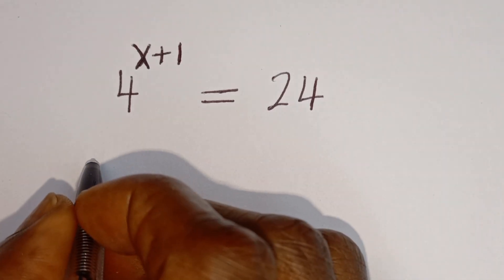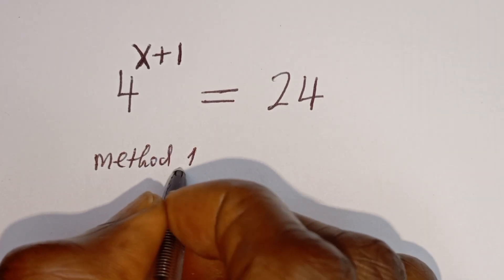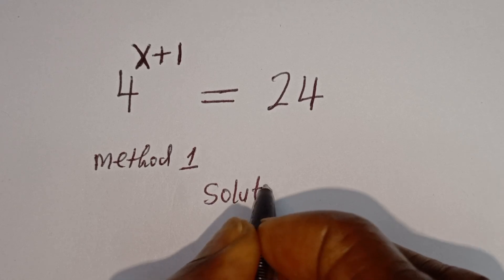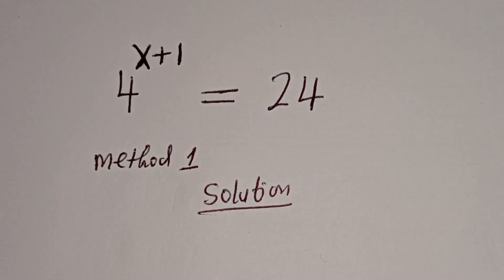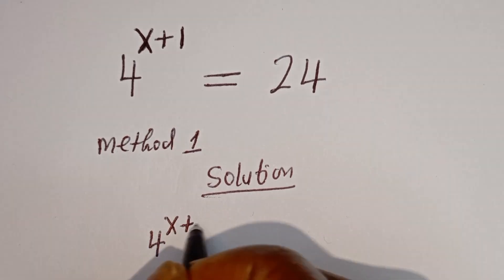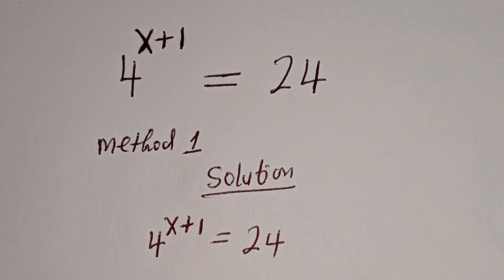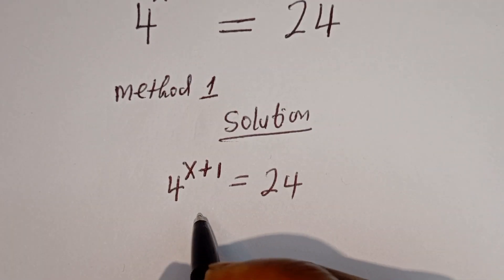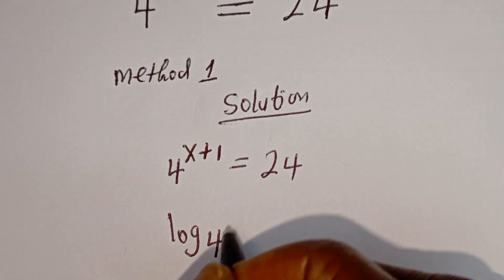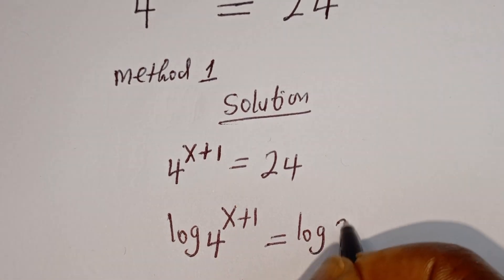Let's consider the first method, Method 1. We have 4 to the power of x plus 1 is equal to 24. Let's take the log of both sides: log 4 to the power of x plus 1 is equal to log 24.